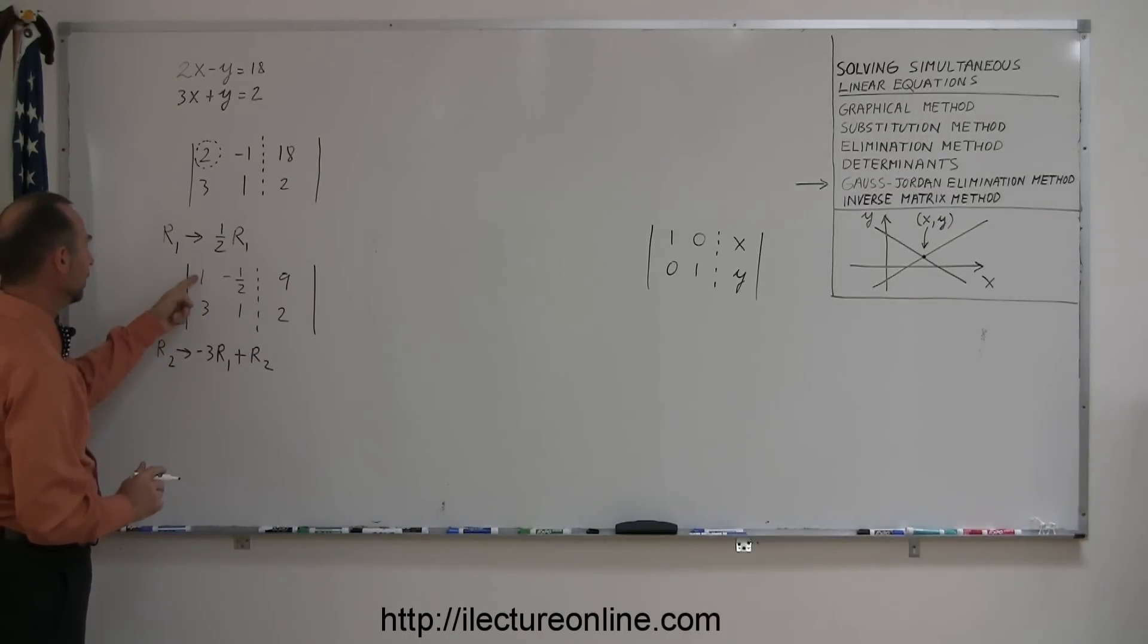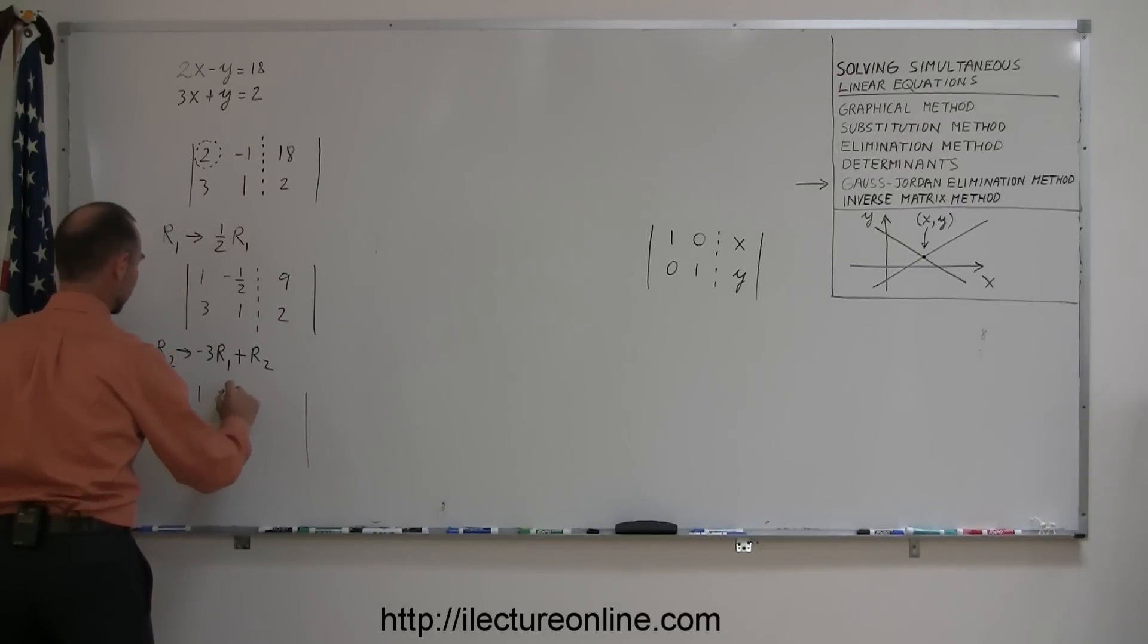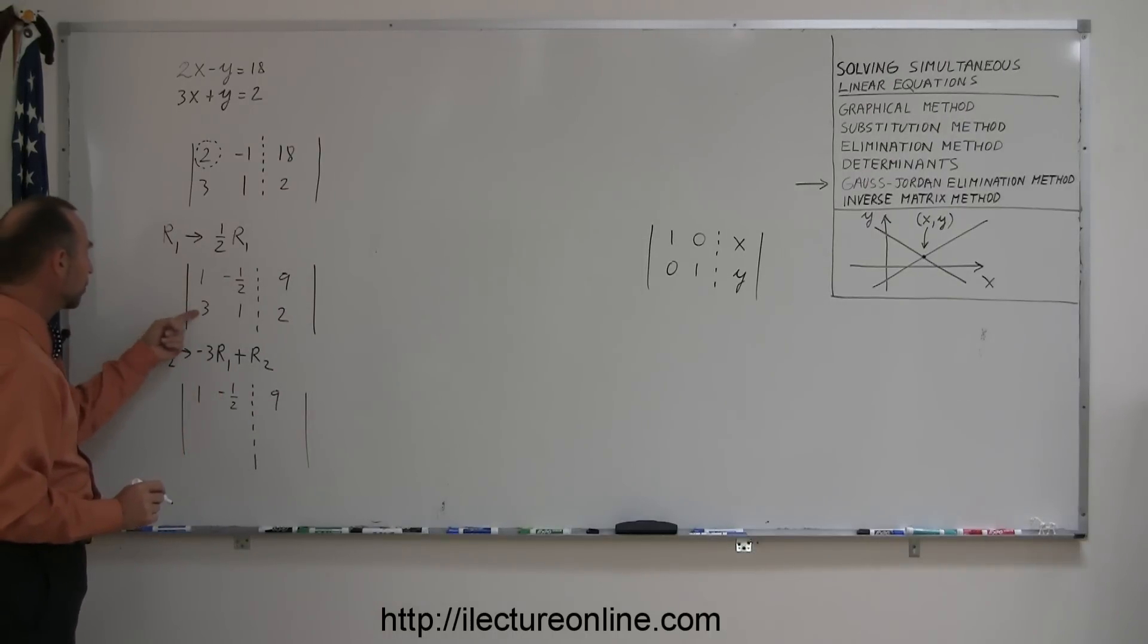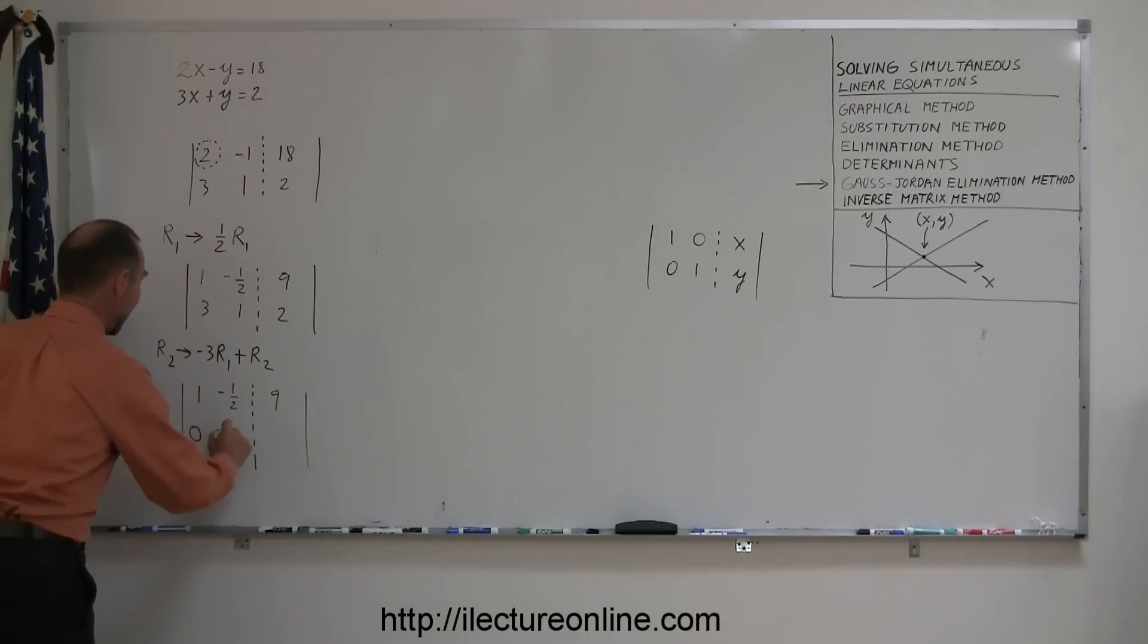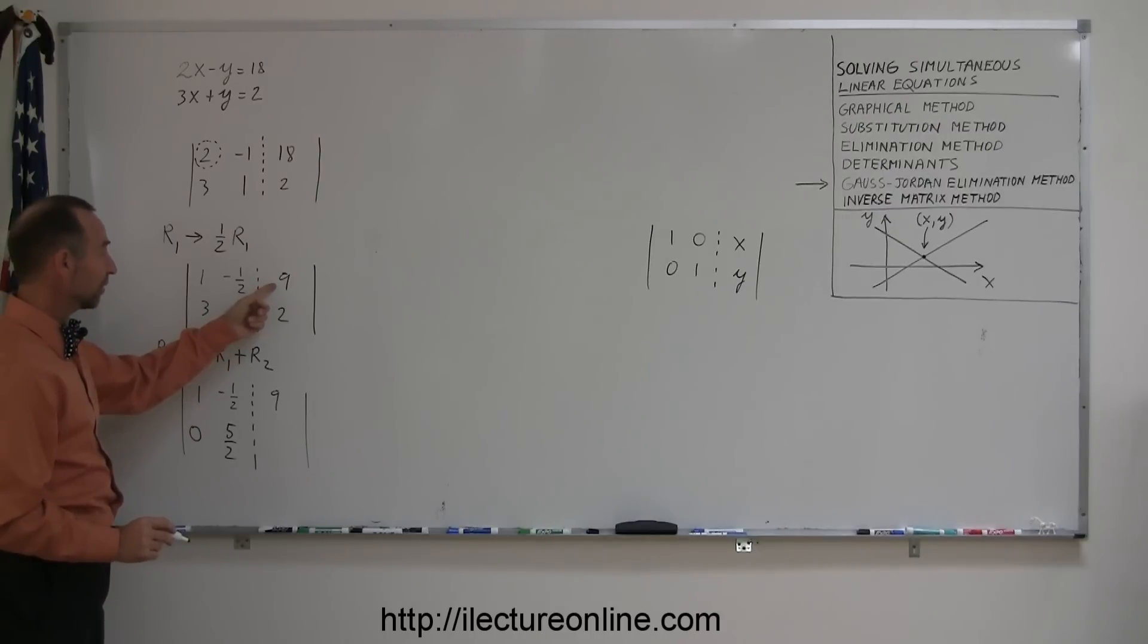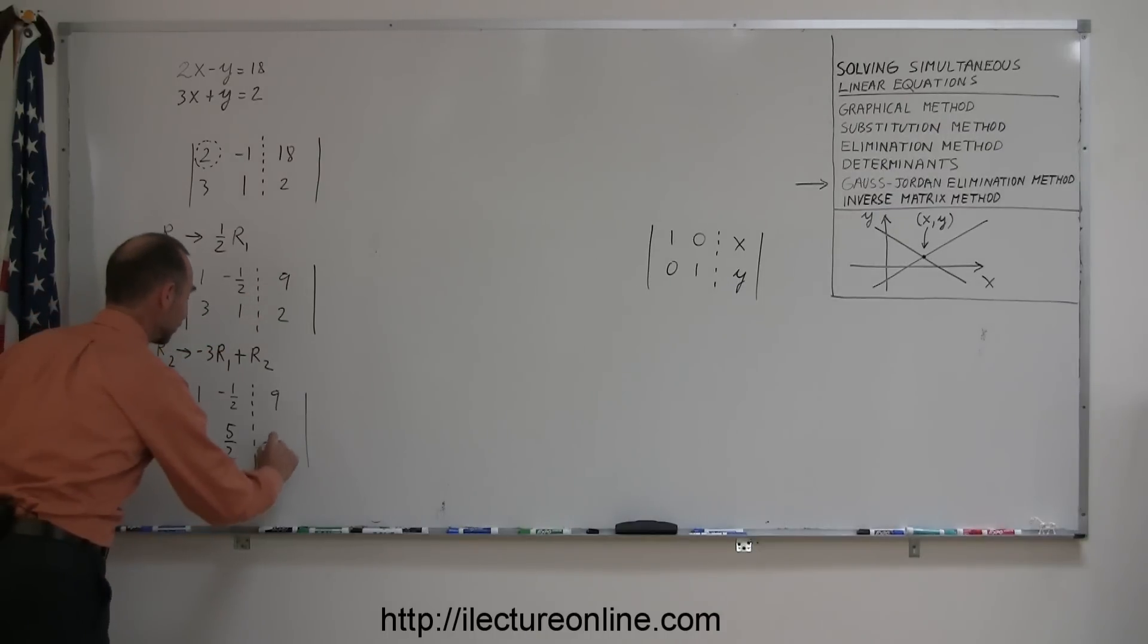So, nothing happens to the first row. So I can rewrite this one as is. So I take negative 3 times a 1, that's negative 3 added to 3, I get 0. Negative 3 times a negative 1 half, that's a positive 3 halves added to 1, which is 2 halves, that gives me 5 halves. A negative 3 times a 9 is negative 27, added to 2 gives me a negative 25. I'm halfway there now, because now I turned this number into a 0.